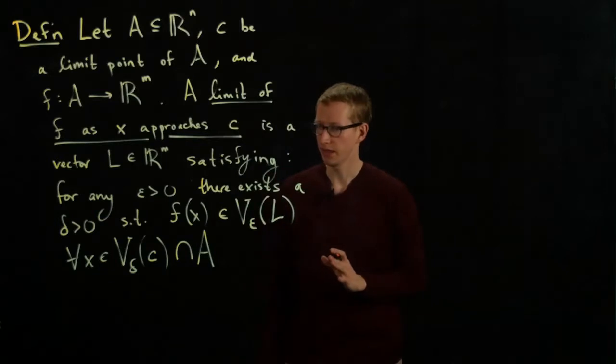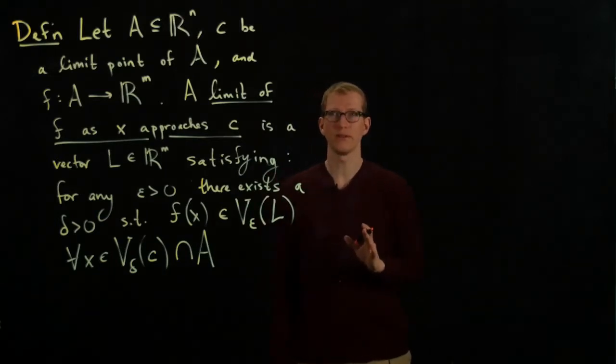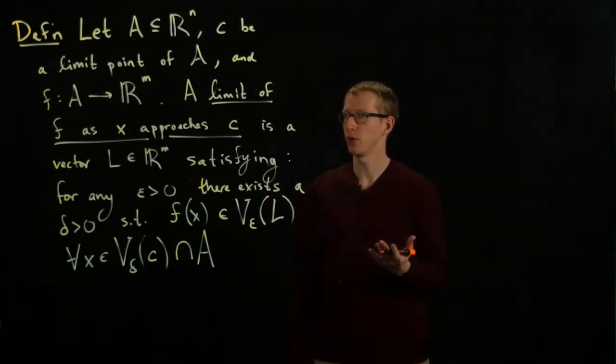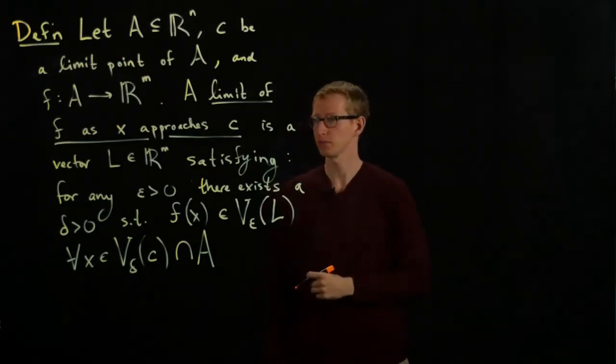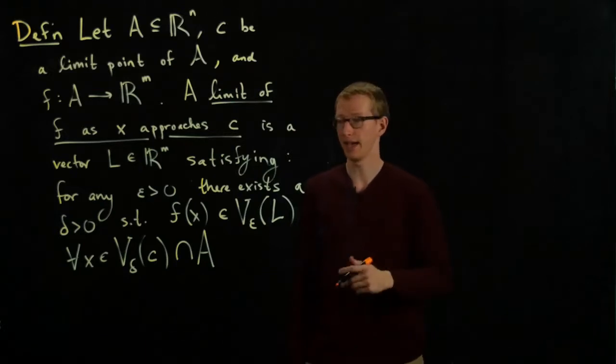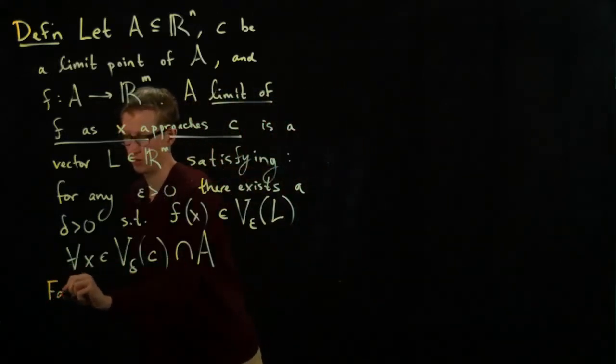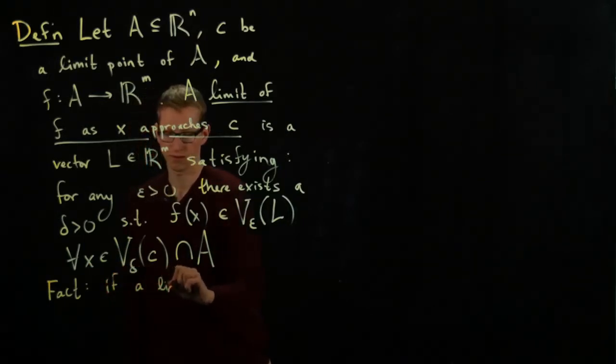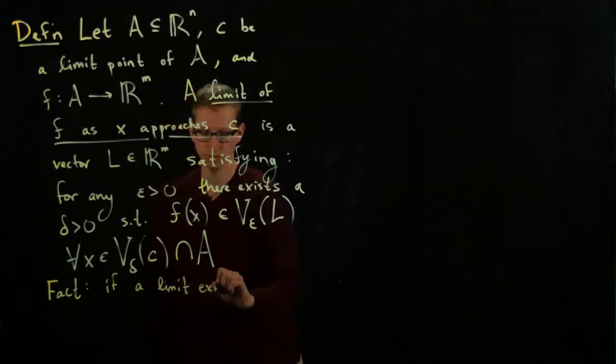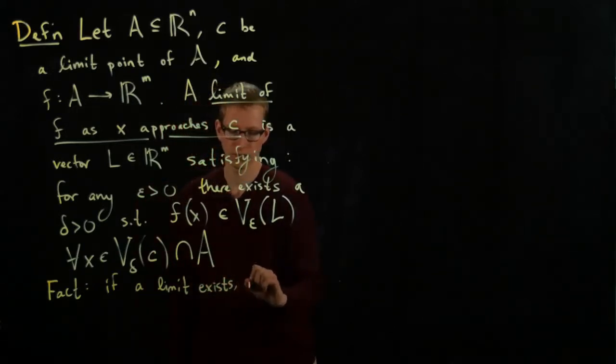Now, in the case of ordinary variables, we asked the following questions. First of all, if a limit exists, is it unique? And this is a fact. We won't prove this. We proved this last semester. If a limit exists, it is unique.